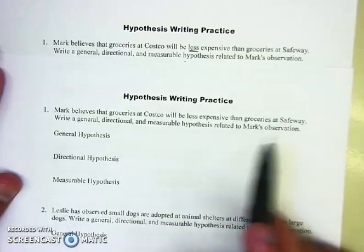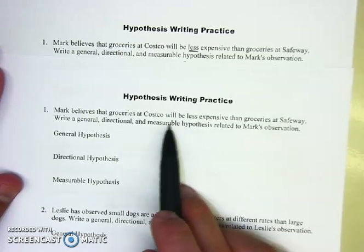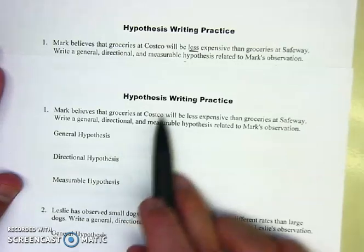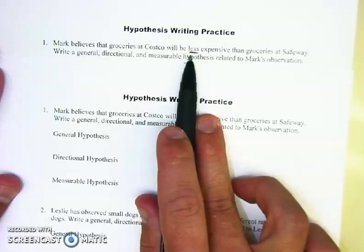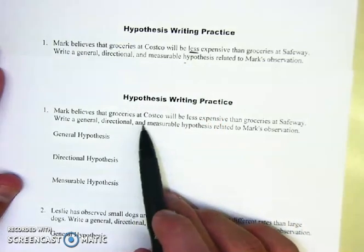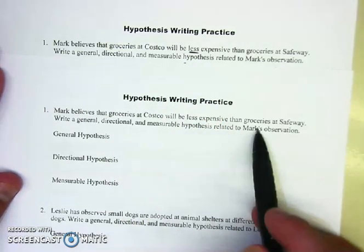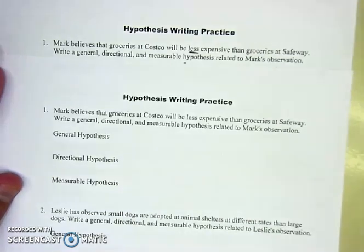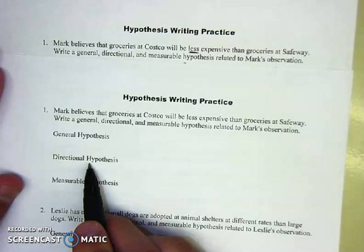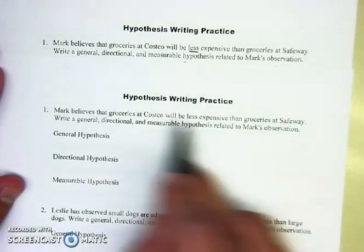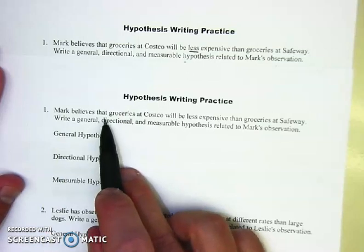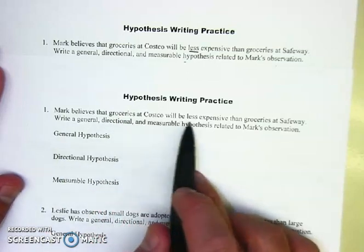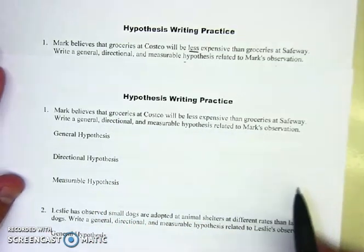Most often in the examples I've seen, they give you a directional example. I underlined the word 'less' because that is a direction already in the problem. It says: Mark believes groceries at Costco will be less expensive than groceries at Safeway. It doesn't say how much, so you know it's not measurable, but it gives you that direction. The directional hypothesis is basically a rewording of this information — along the lines of 'groceries at Costco will be less expensive than groceries at Safeway.'